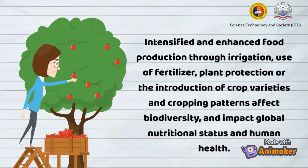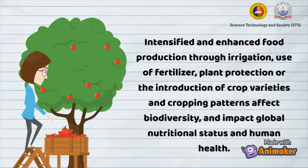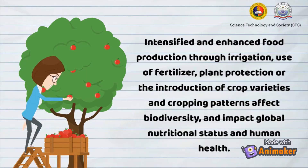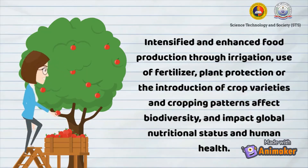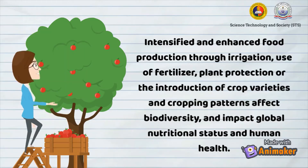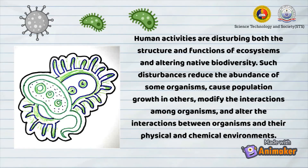Habitat simplification, species loss, and species succession often enhance community vulnerability as a function of environmental receptivity to ill health. Human activities are disturbing both the structure and functions of ecosystems and altering native biodiversity. Such disturbances reduce the abundance of some organisms, cause population growth in others, modify the interactions among organisms, and alter the interactions between organisms and their physical and chemical environments.